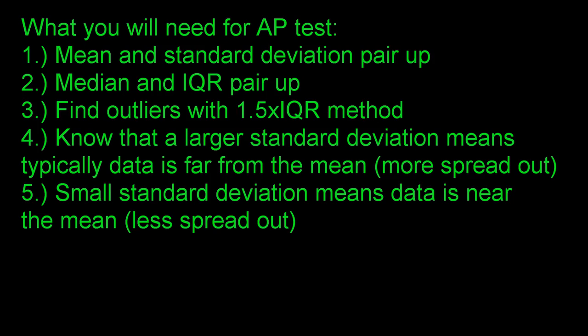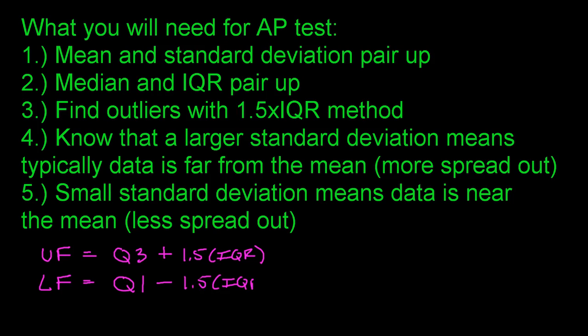You also need to find outliers using the 1.5 × IQR method. For upper outliers, calculate the upper fence: Q3 + 1.5 × IQR — any values above that are outliers. For lower outliers, calculate the lower fence: Q1 − 1.5 × IQR — any values below that are outliers. Some FRQs ask you to find outliers and show all work, so make sure you know this method.